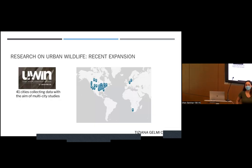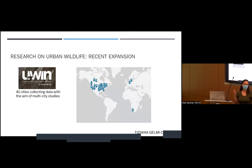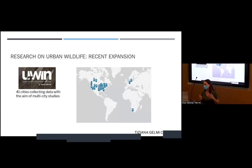Research in urban wildlife has expanded in the last few years, and many cities collecting data on urban wildlife have come together to try to create a network that will eventually produce papers on multi-city comparisons. This is the UIN network, and it has 41 cities — it's gone from 10 or 15 in the last three or four years to 41.